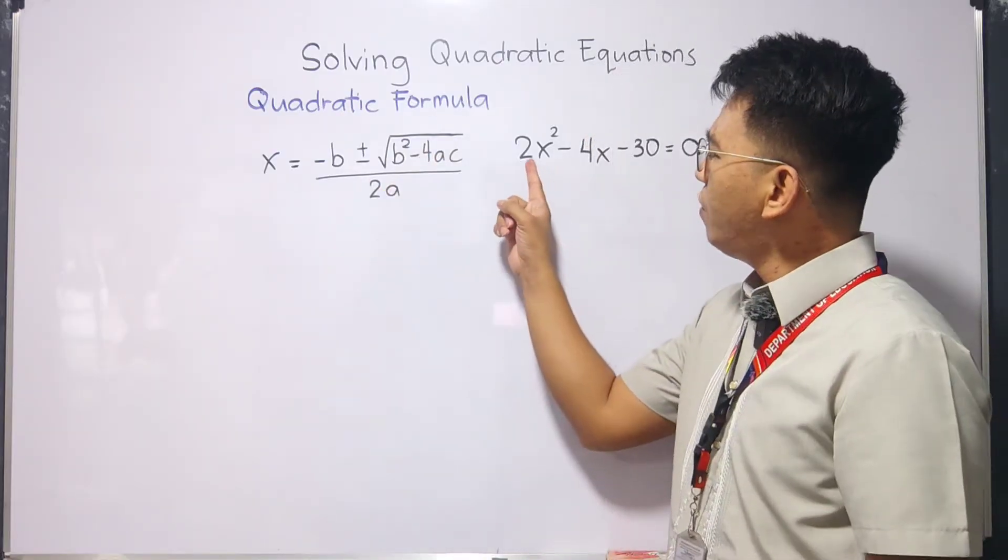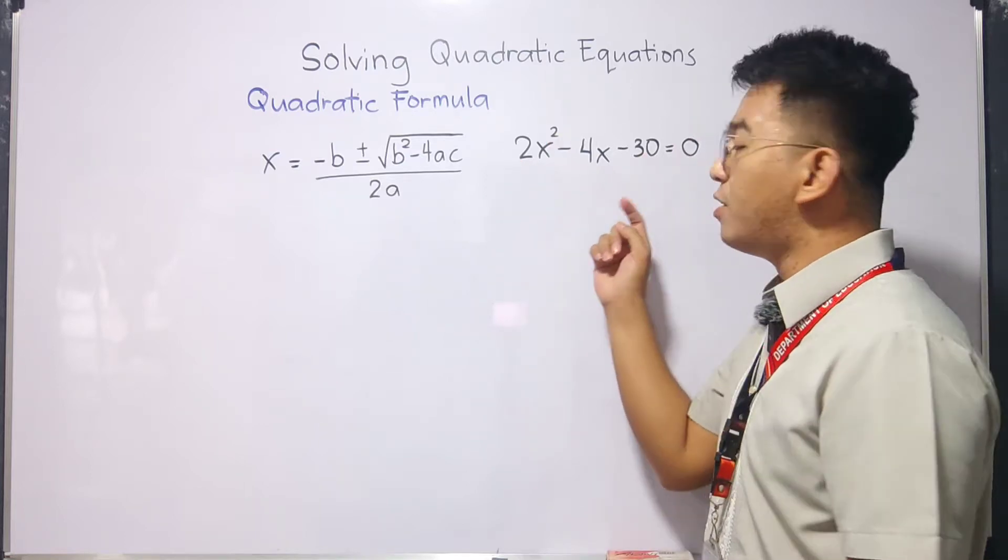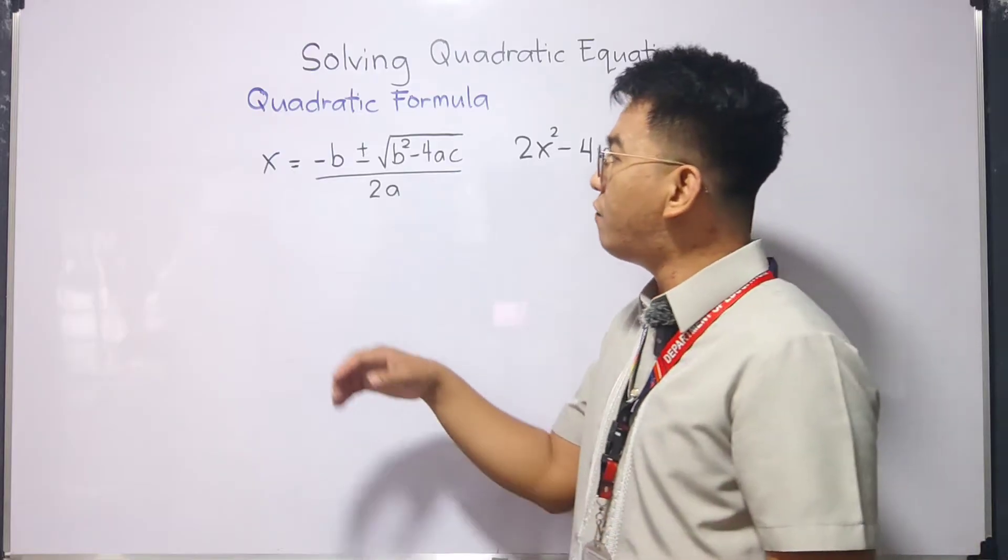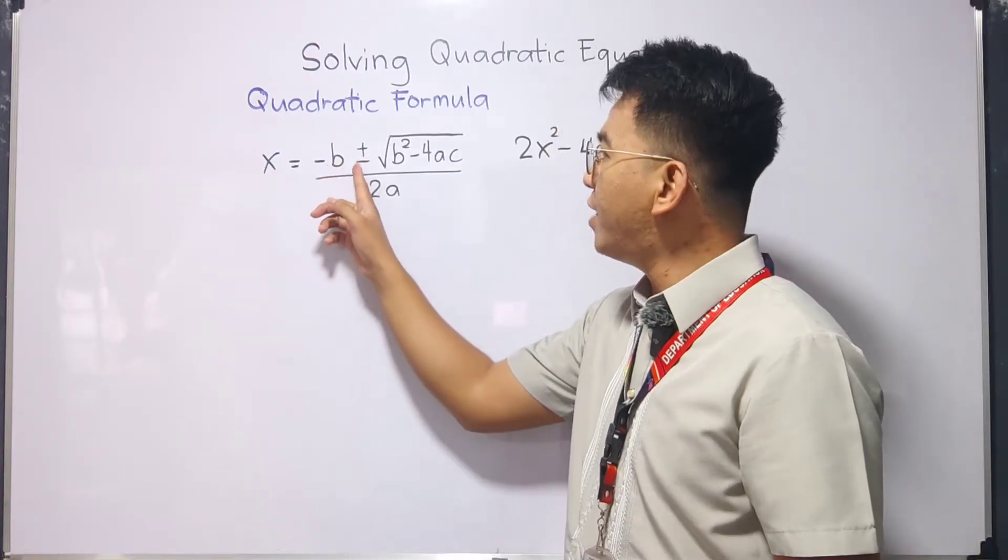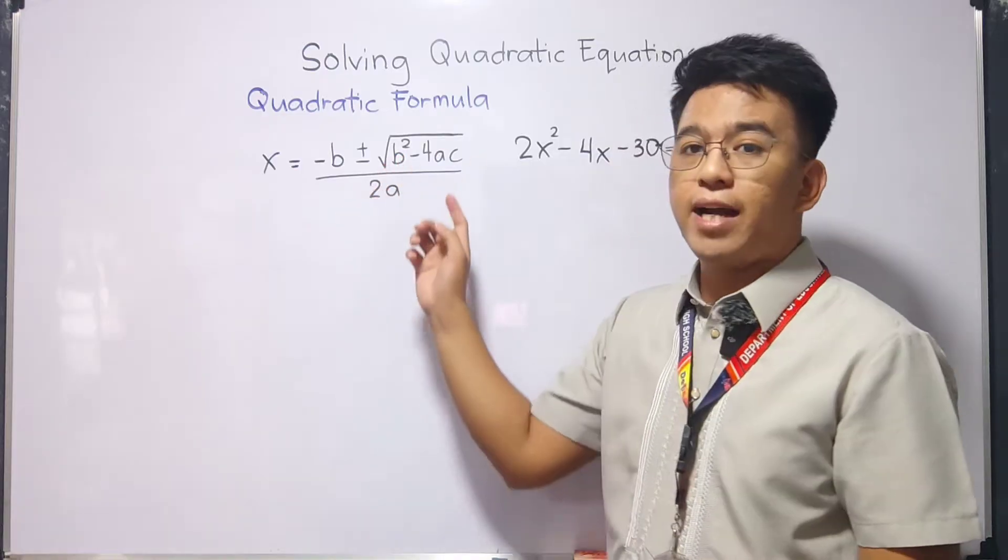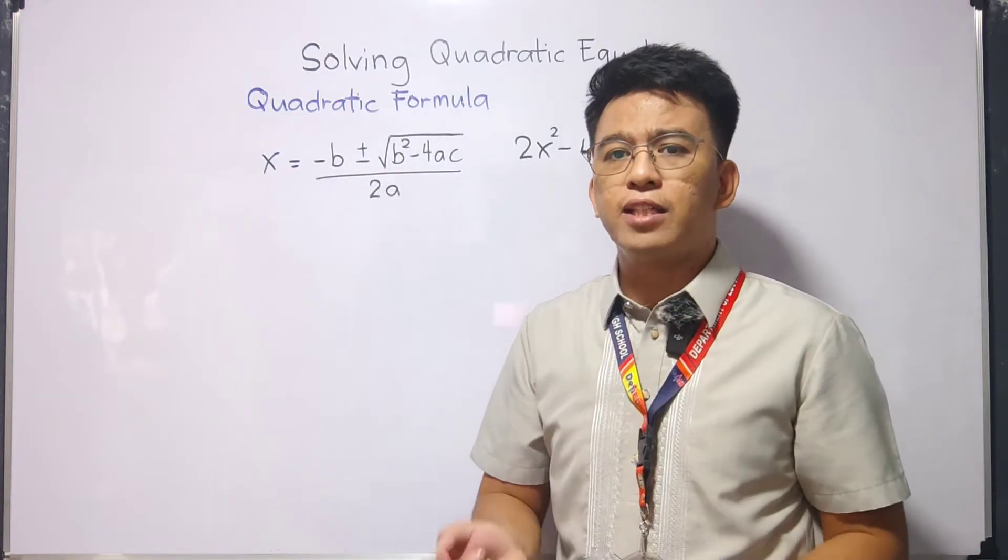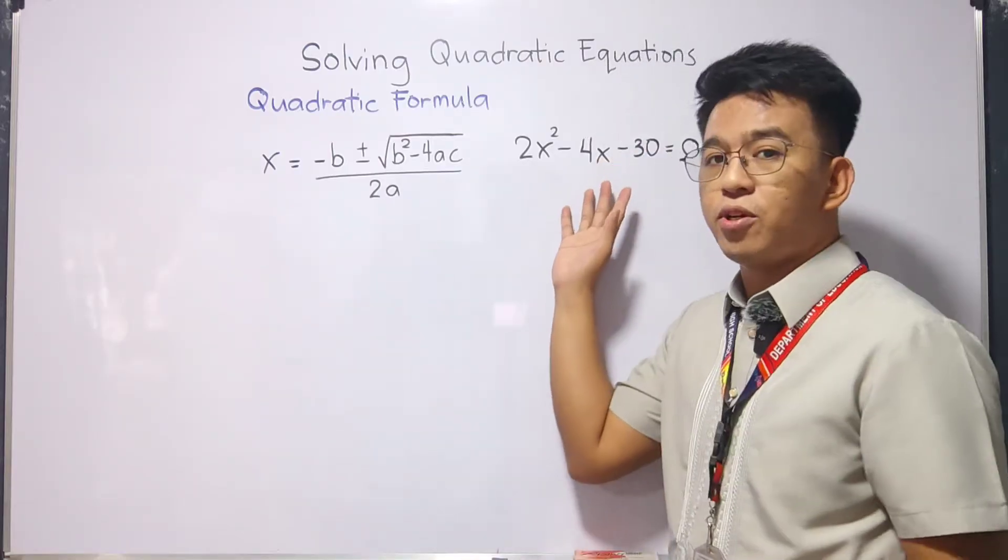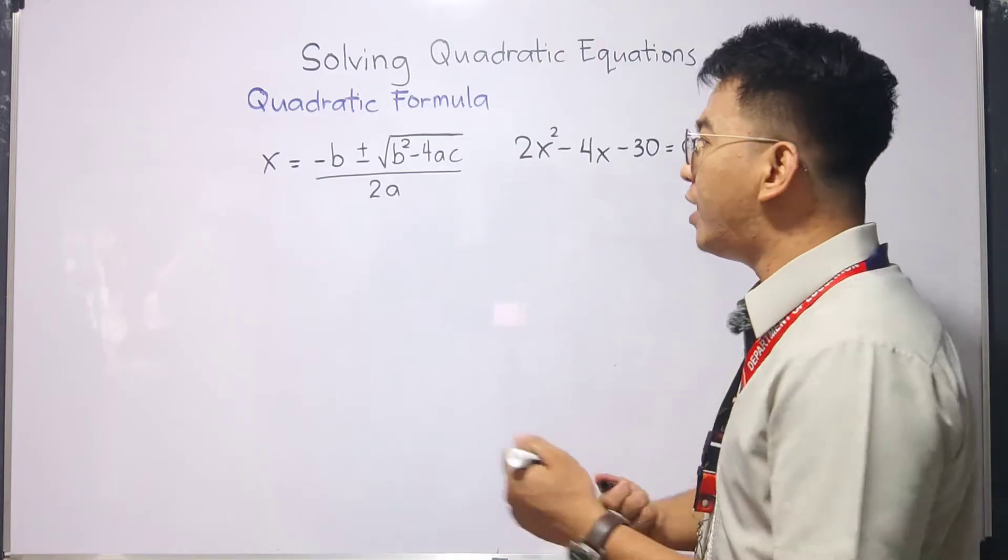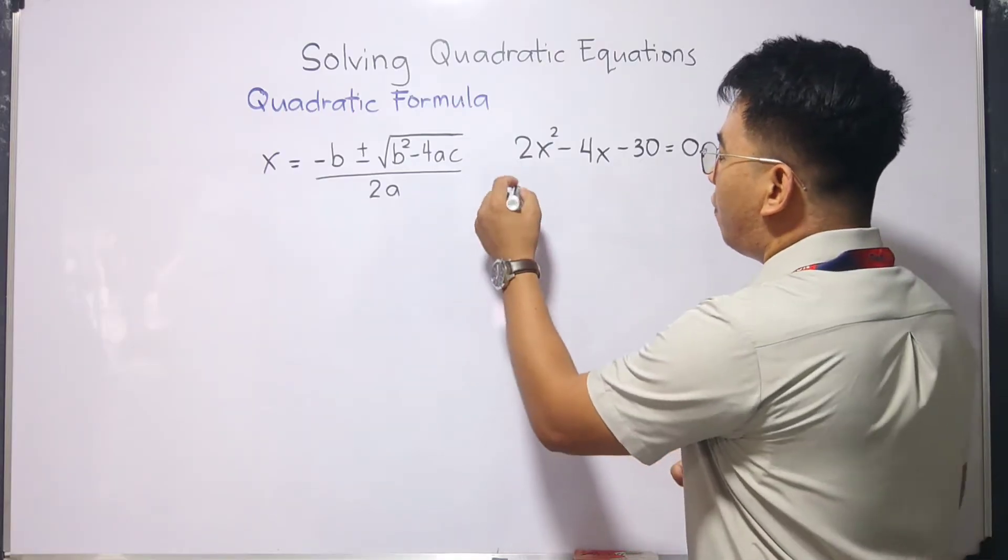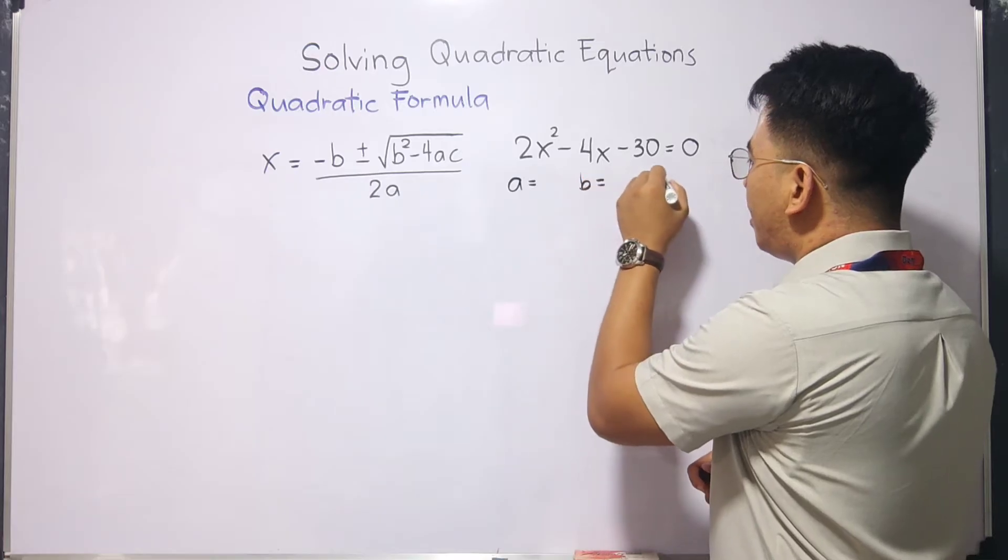Now, what we have here is 2x squared minus 4x minus 30 is equal to 0. And we will solve this using the formula x is equal to negative b, positive negative square root of b squared, minus 4ac over 2a. What you need to secure here is first, you need to express your equation in standard form. And then eventually, you can get the values of a, b, and c.